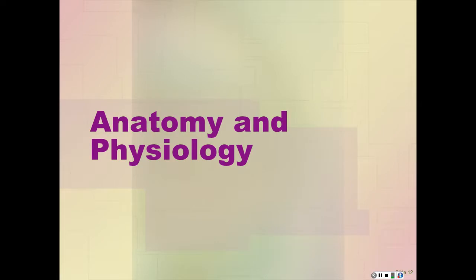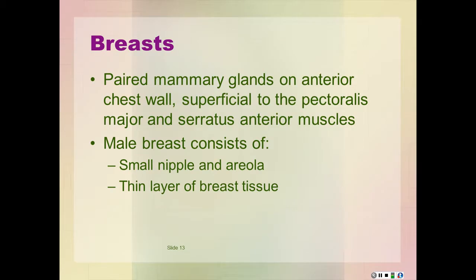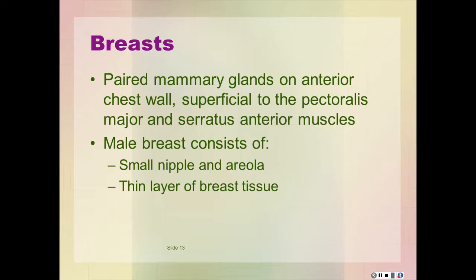We'll review some of the anatomy and physiology that will help us talk about the complete physical exam. There are paired mammary glands located on the anterior chest wall, superficial to the pectoralis major and serratus anterior muscles. In women, the breast extends from the 2nd or 3rd rib to the 6th or 7th rib and from the sternal margin to the mid-axillary line. If you don't examine all the breast tissue, it could tragically leave something undiscovered.